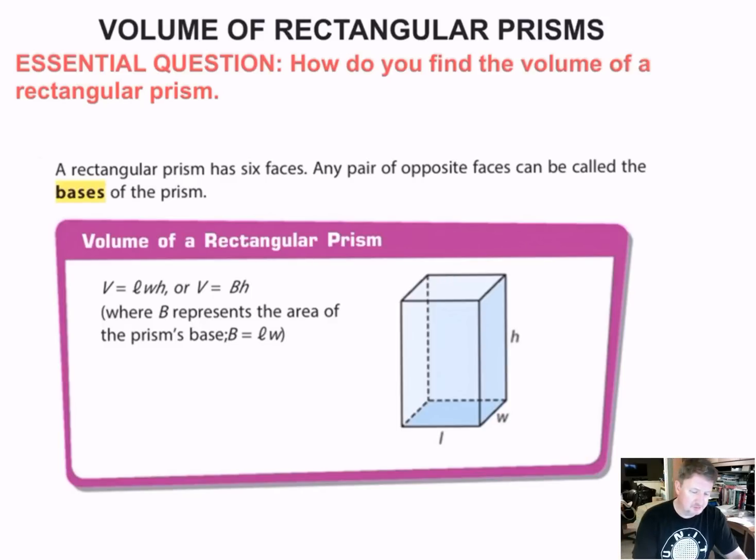Volume of rectangular prisms is our topic. Our essential question, or what I want you to know by the end of this video, is how do you find the volume of a rectangular prism? A rectangular prism has six faces. We've seen it, we've built them, we've used the nets, we know what these things look like. It says any pair of opposite faces can be called the bases of a prism. So, in this particular case, this is a base and this is a base. Or, this could be a base and this could be the base. Or, the back over here could be the base, and the front right here could be the base.